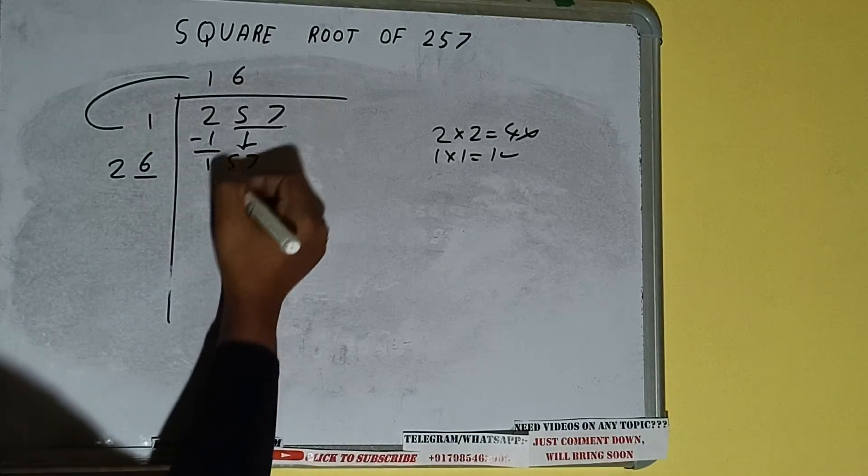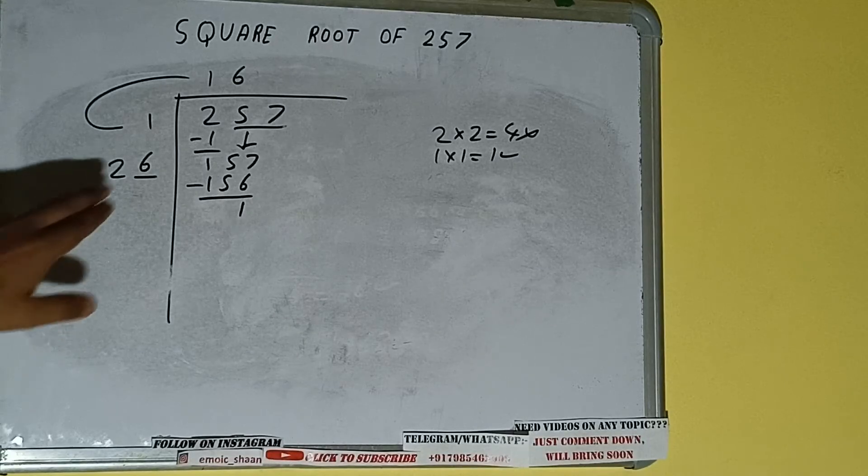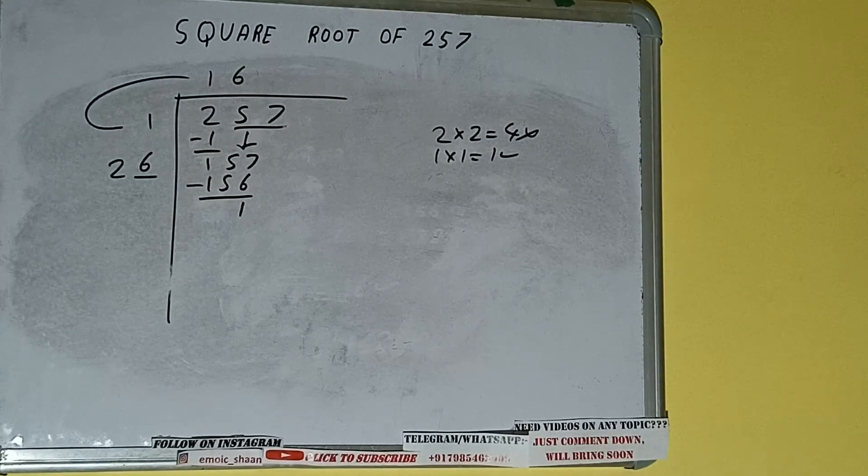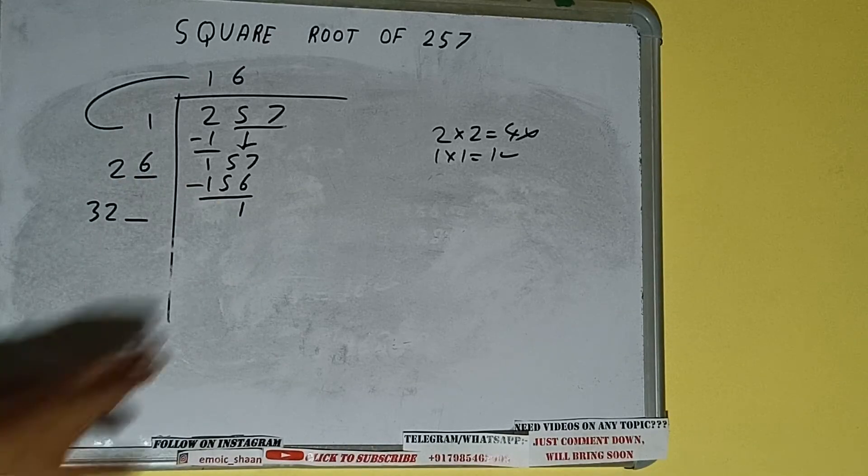Subtract, one will be left. Now 26 into 6 we did, so add both. So 26 plus 6 will be 32, write it here and keep a digit extra. And this number we need to make it big.